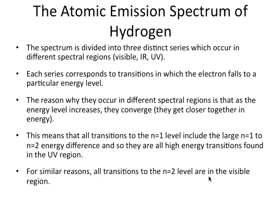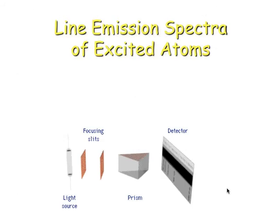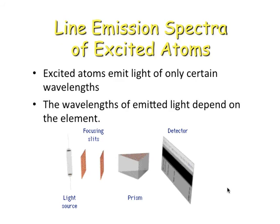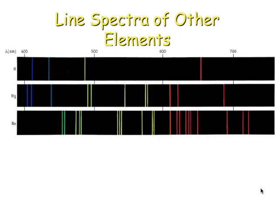And then this is really just putting into words everything that was just said on that previous slide. Line emission spectra of excited atoms. Excited atoms emit light of only certain wavelengths, and that's because of the discrete energy levels. Wavelengths of emitted light depend on the element. Here's some examples of what other elements would have as an emission spectrum.